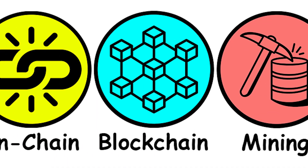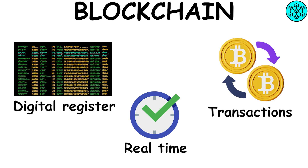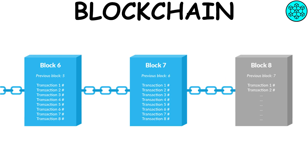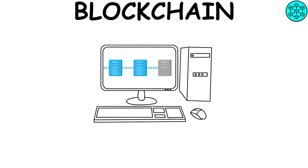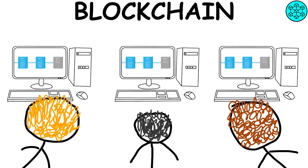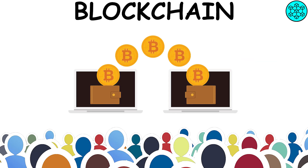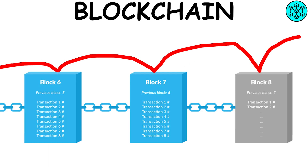Blockchain: the blockchain is a digital register that updates in real time all the transactions that are made in the world of cryptocurrencies. Each transaction is written in a block and each block is linked to the previous one, forming a chain of blocks. This digital register is accessible to everyone online and is the same for everyone. When a new transaction occurs, everyone on the network can see it. Its security is at the highest levels because each block is connected to the previous one.